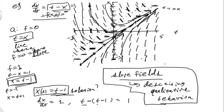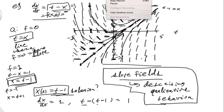So slope fields describe the qualitative behavior of what a DE says about its solutions — what do solutions do in general. In a later video I'll go over more examples and show how to use technology to create slope fields so you don't have to do this by hand. Thanks very much.